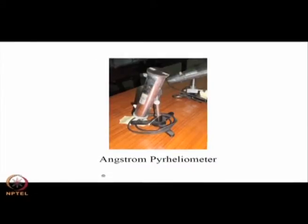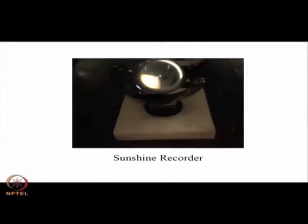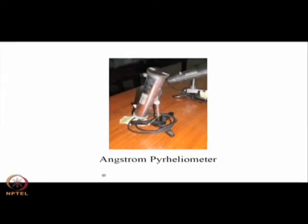This is an Angstrom pyrheliometer. The sensor mechanism is different in the sense that it uses a null detection system — similar to a post office box in electrical technology. You try to balance the system so that the current passing through a particular circuit is zero, thereby giving you a measurement of the voltage generated or the power consumed.